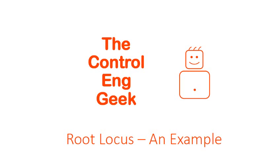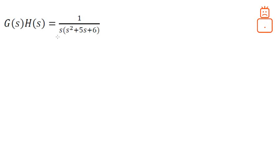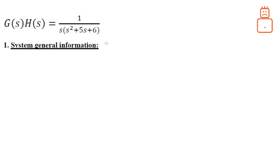Hi guys, the control engineering tutorial is here. Today we are going to take an example about how to draw the root locus. We have this forward transfer function 1 over s(s² + 5s + 6). We need to know how the locus or location of the poles and zeros are affected as we vary the gain k of the controller from 0 to infinity.